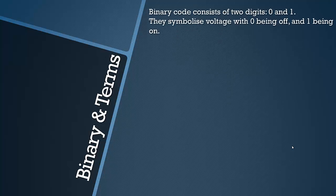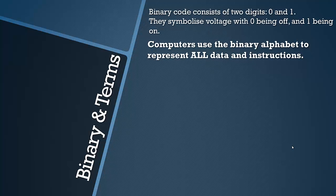Binary code consists of two digits, zero and one, and they're used because they symbolize voltage with zero being off and one being on. All computers use binary code. It's basically the simplest way that computers can represent things because when it's off it represents zero, when it's on it represents one. Computers use a binary alphabet to represent all data and instructions.